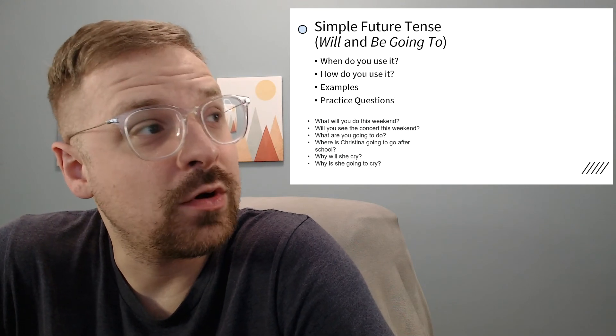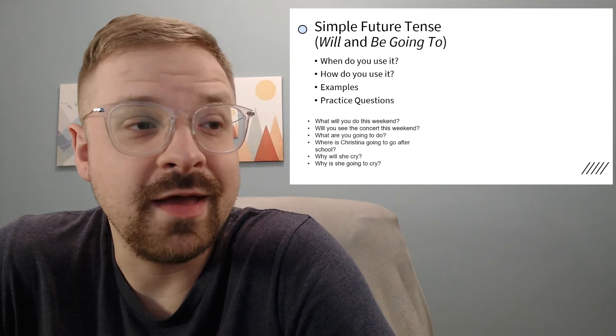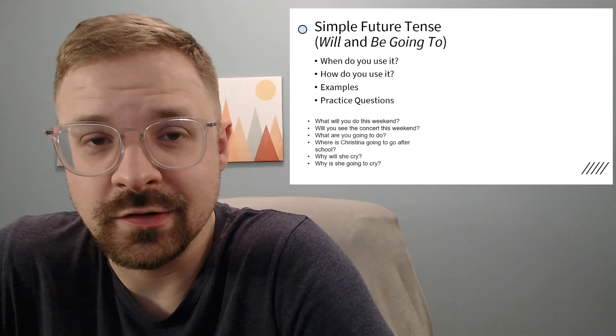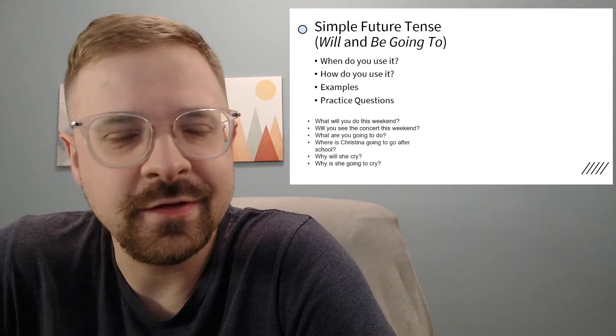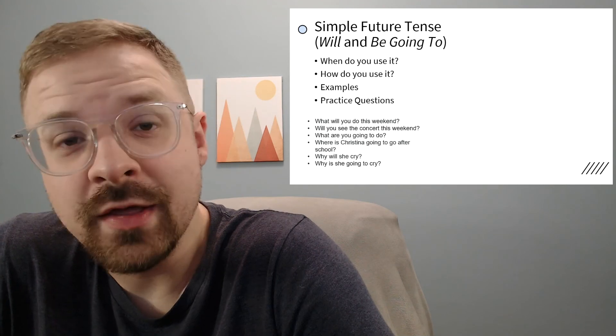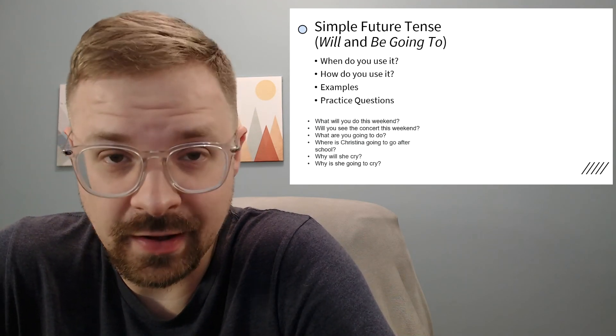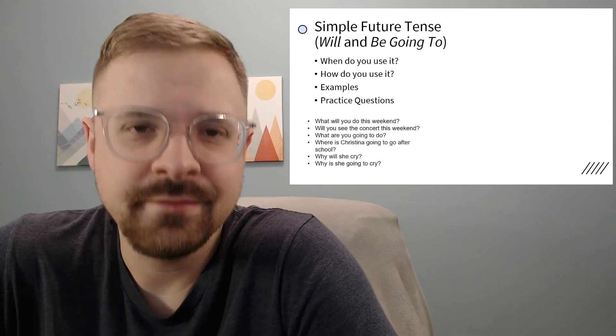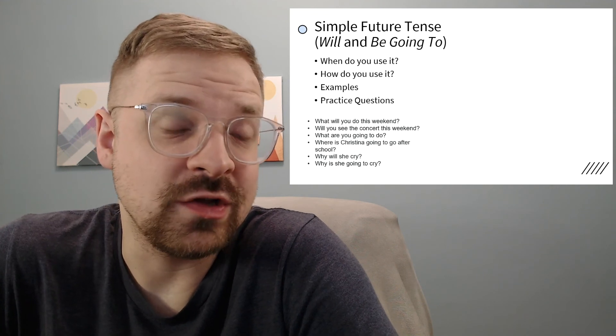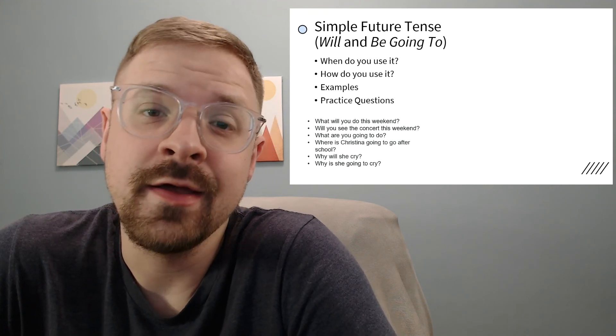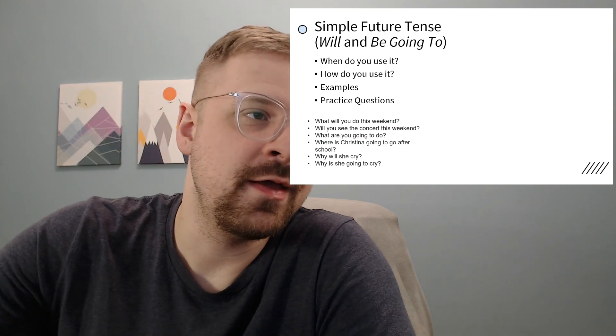Next we have two 'why' questions - one of them is a 'why will' and the other is a 'why be going to.' Let's take a look. Why will she cry? We have 'why,' so that means typically our answer is going to have 'because.' She'll cry because she's sad. Why is she going to cry? She's going to cry because she's sad. And that is it for this video.